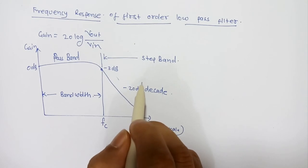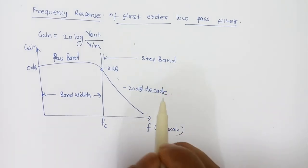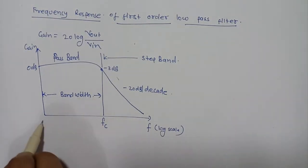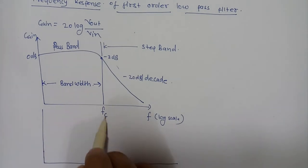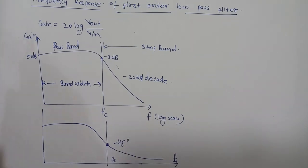If we draw the phase response of the filter, suppose this is Fc and this is F, the phase response will be something like this. There will be a -45 degree lag. This will be 0 degrees, this is -45 degrees. For a first order filter there will be -90 degree phase shift in the stopband region.